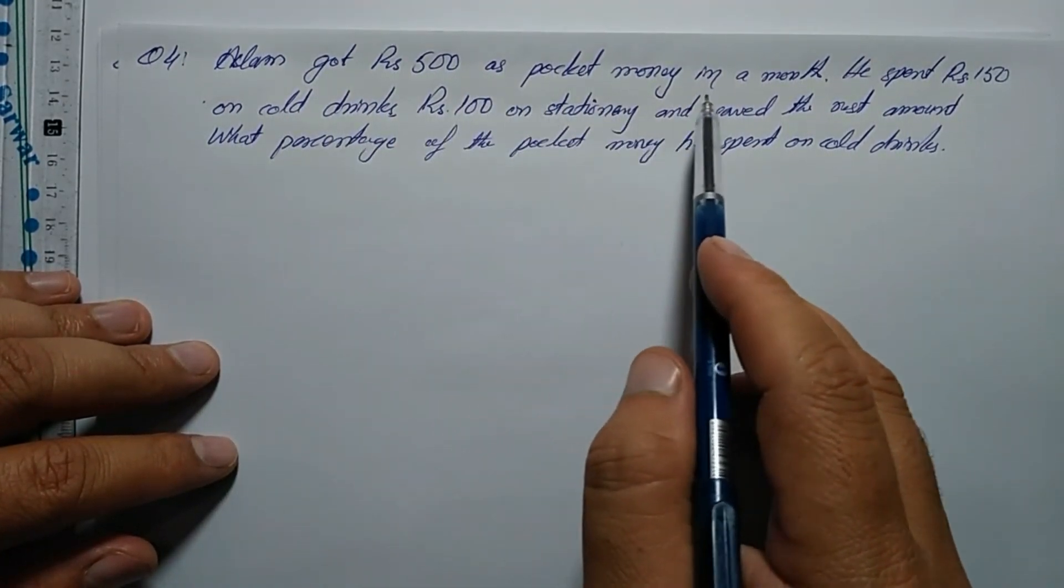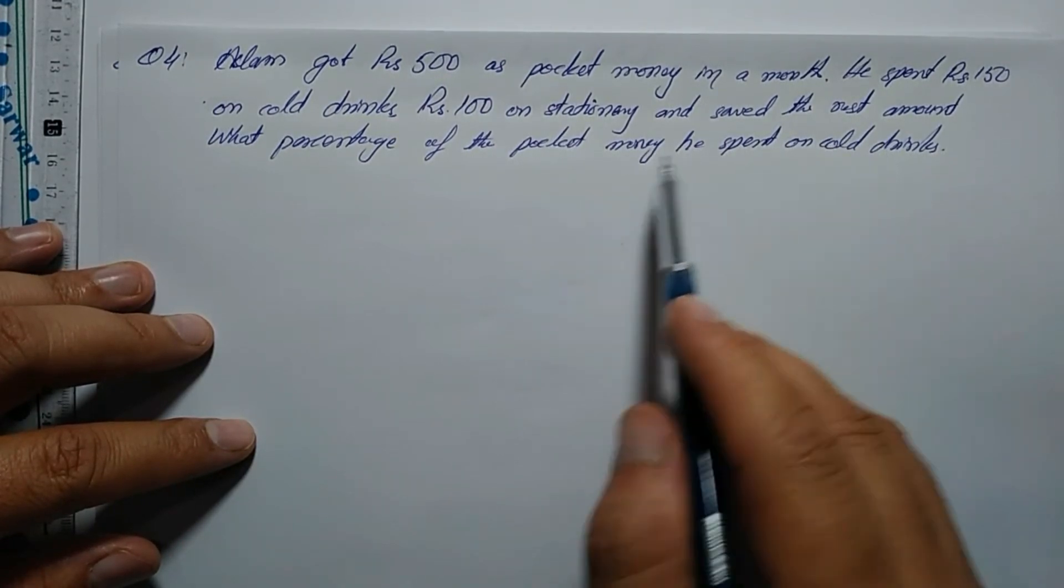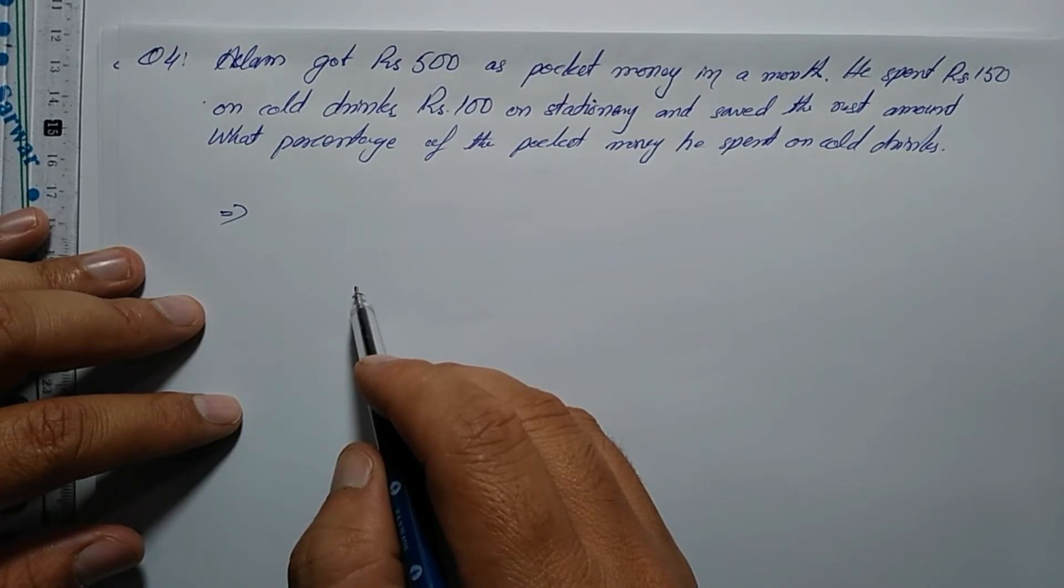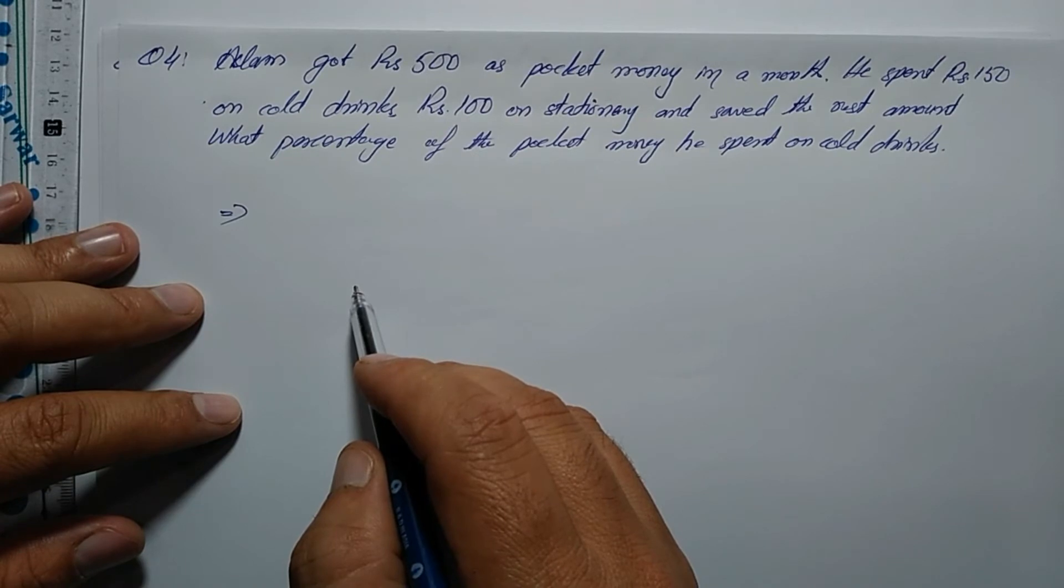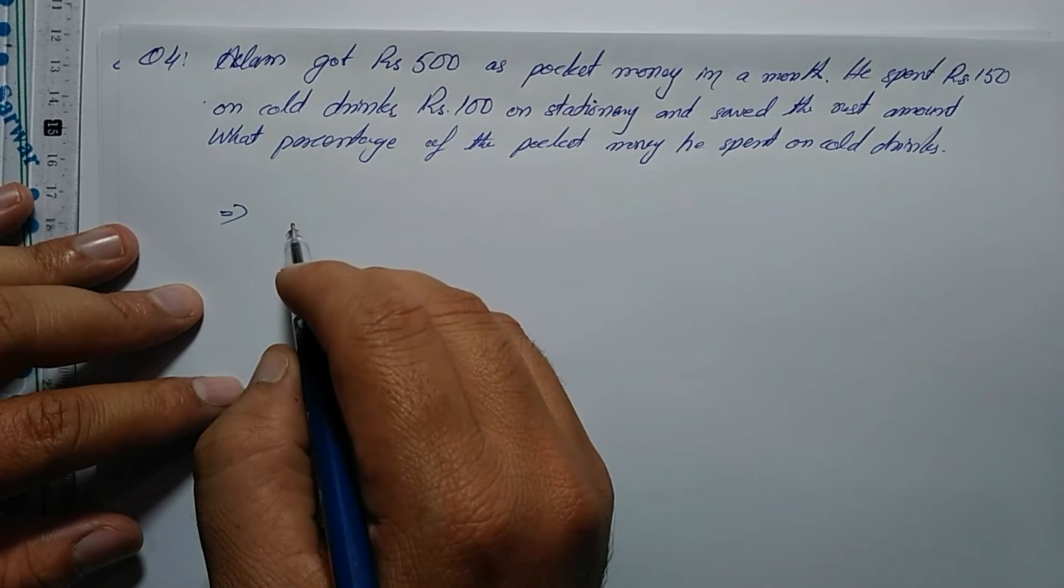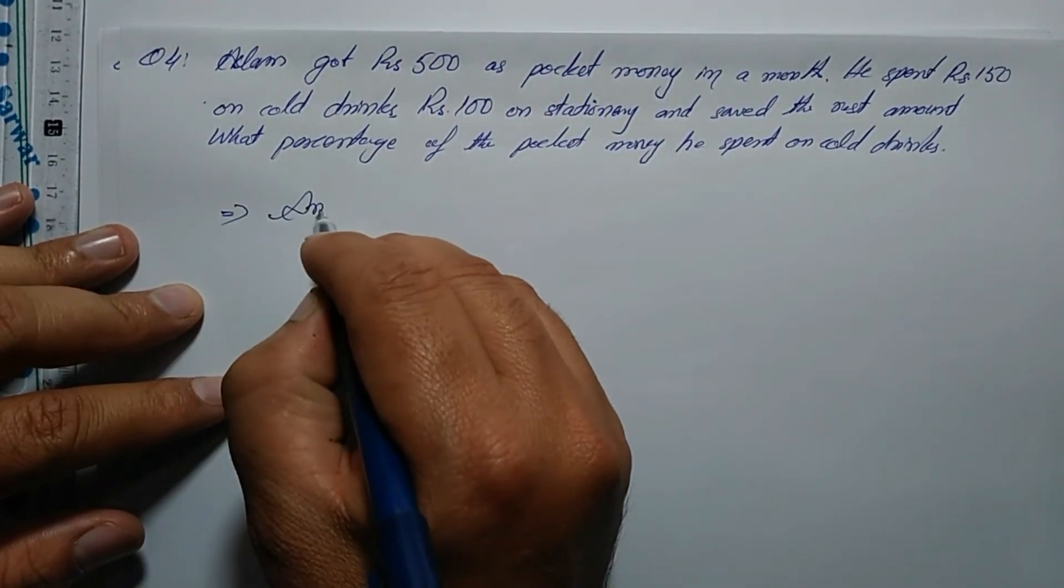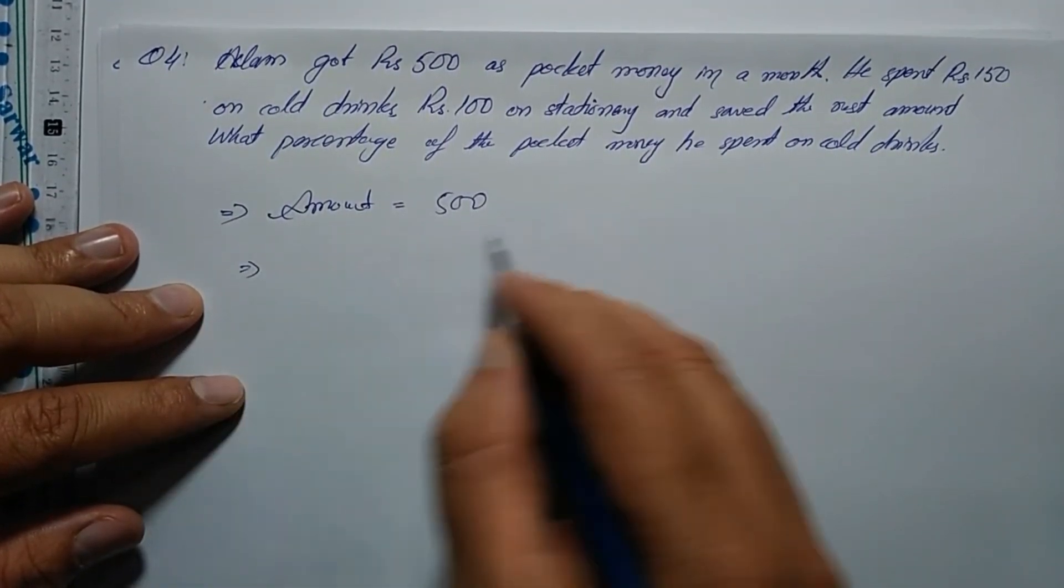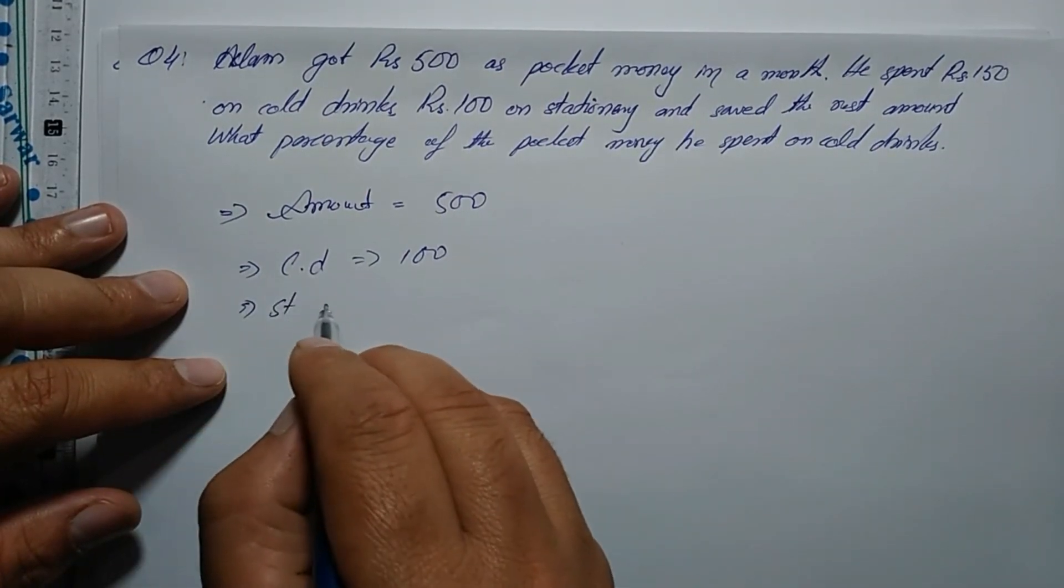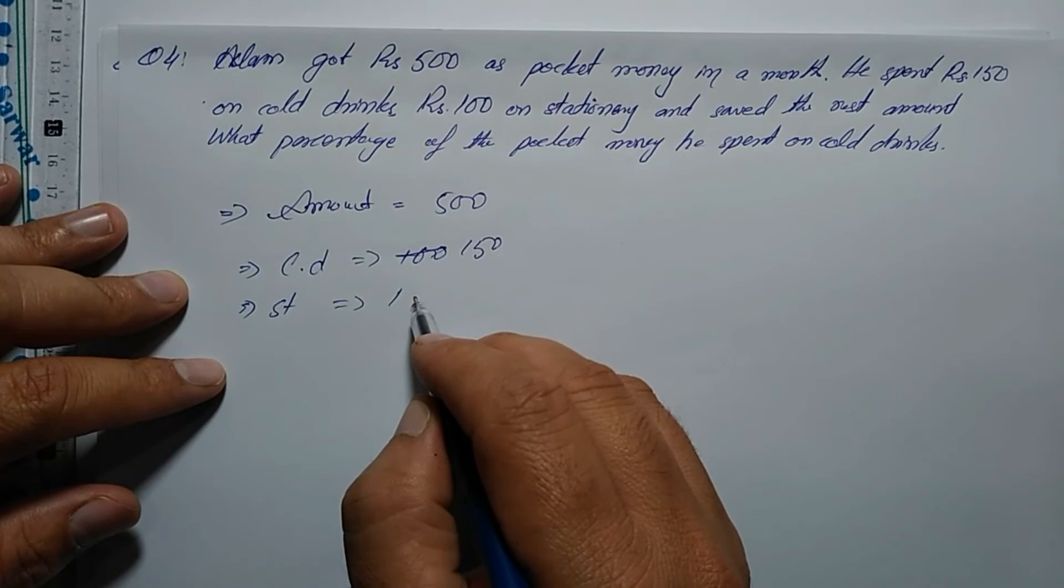Question 4: Aslam got 500 rupees as pocket money in a month. He spent 150 on call rings and 100 on stationery and saved the rest. What percentage did he save? The total amount is 500.